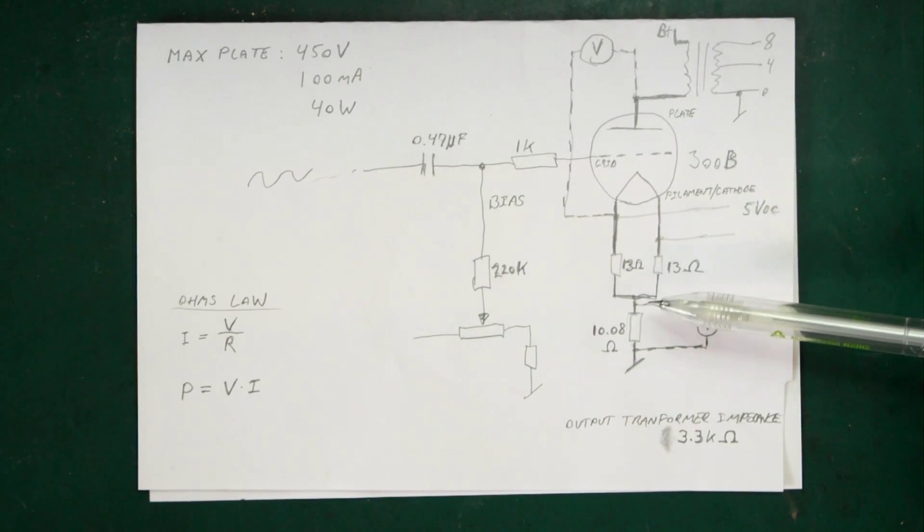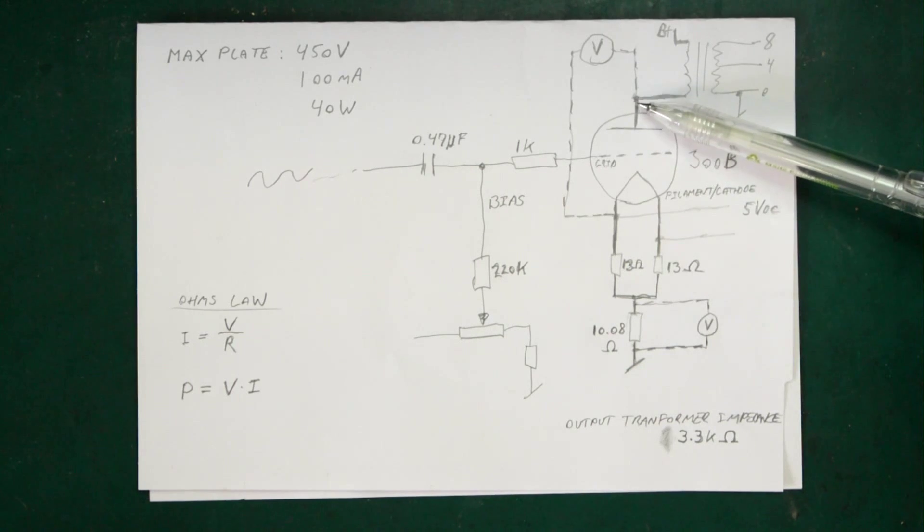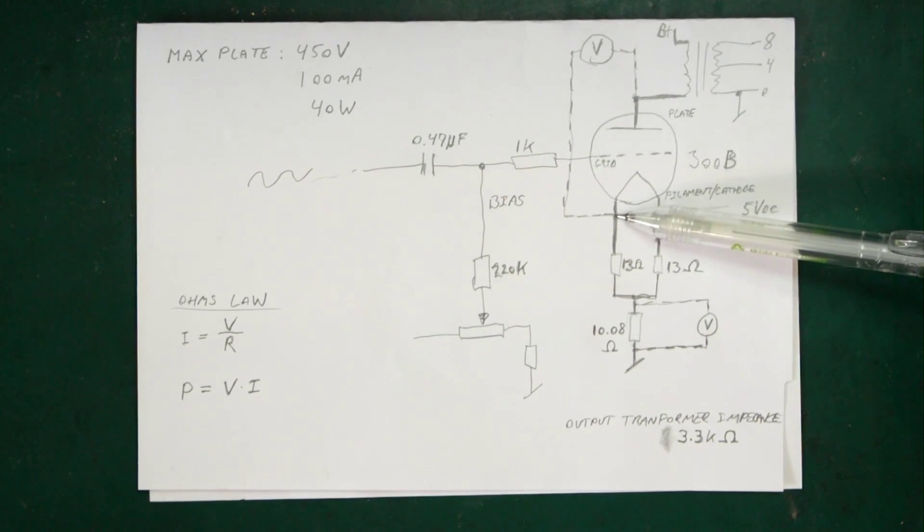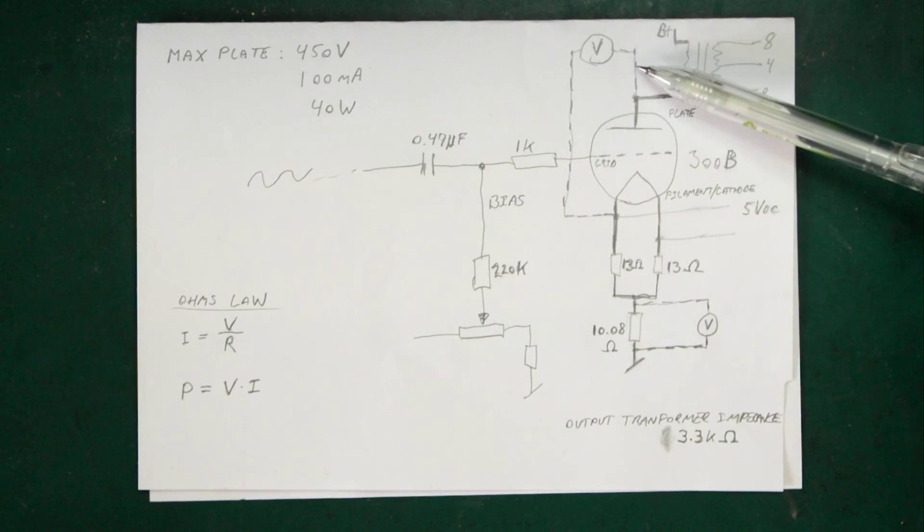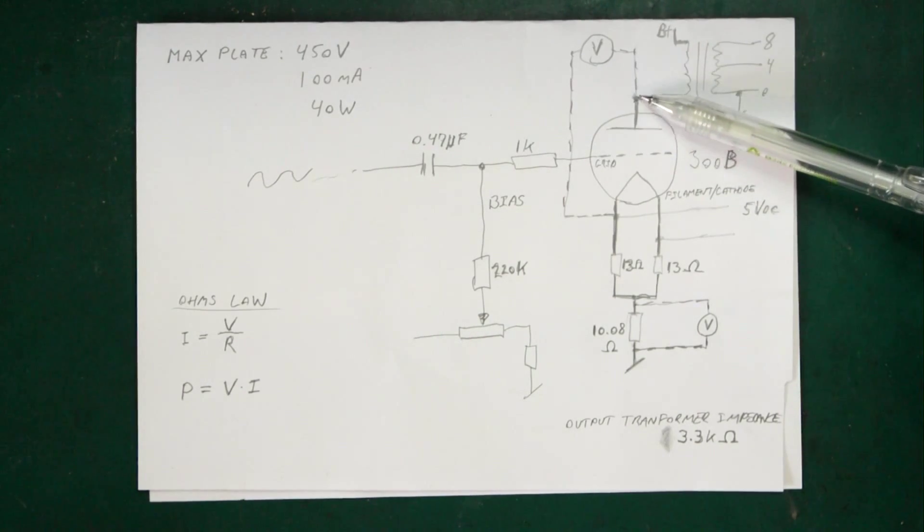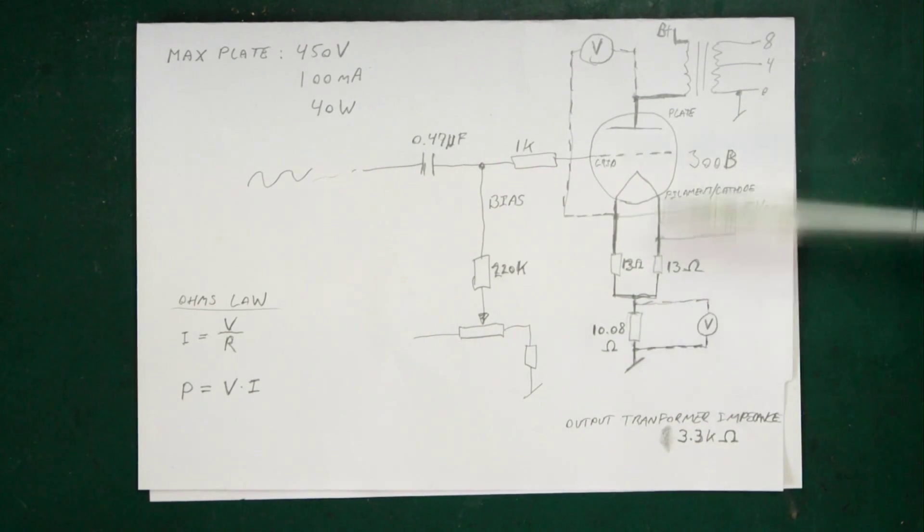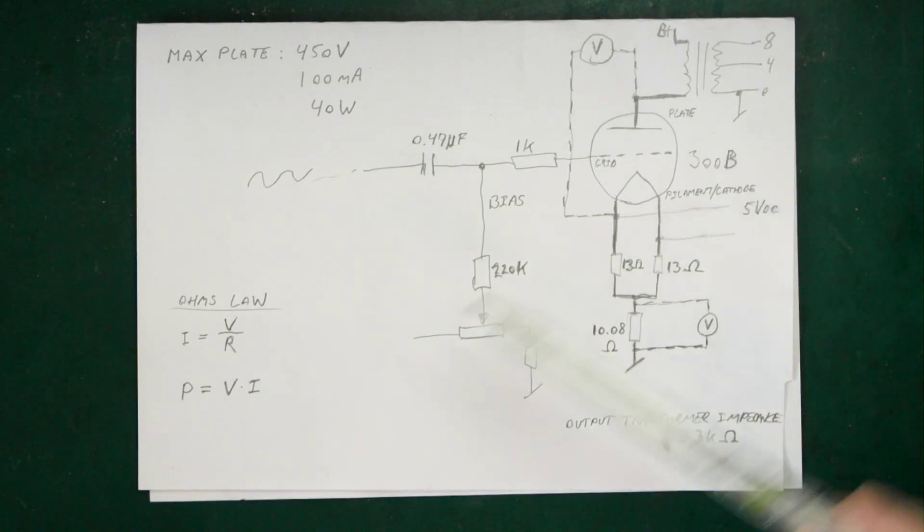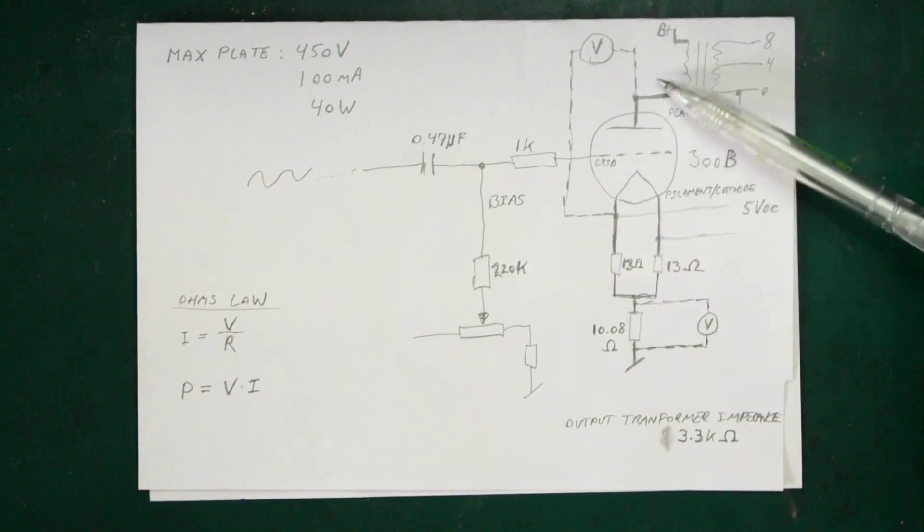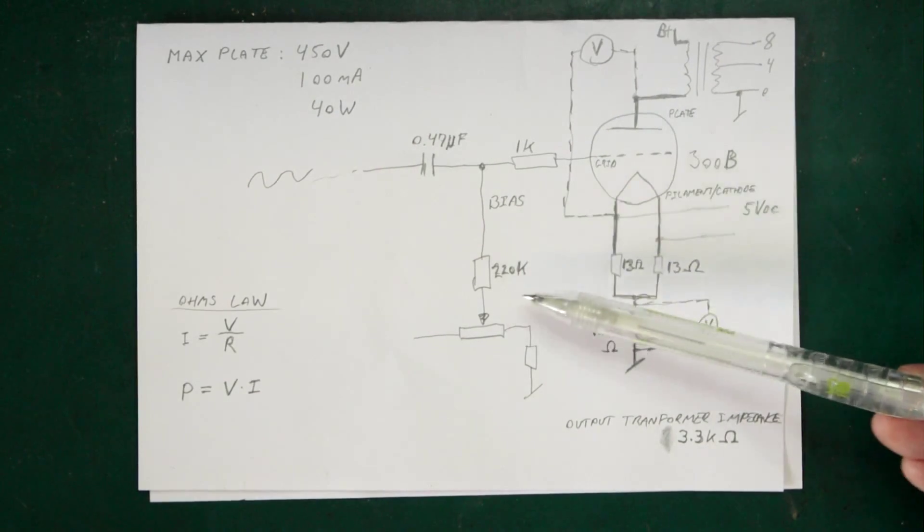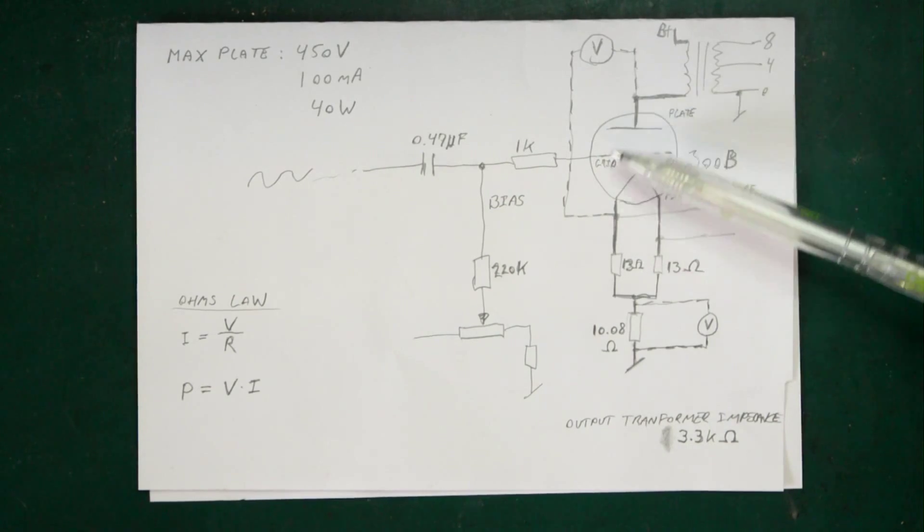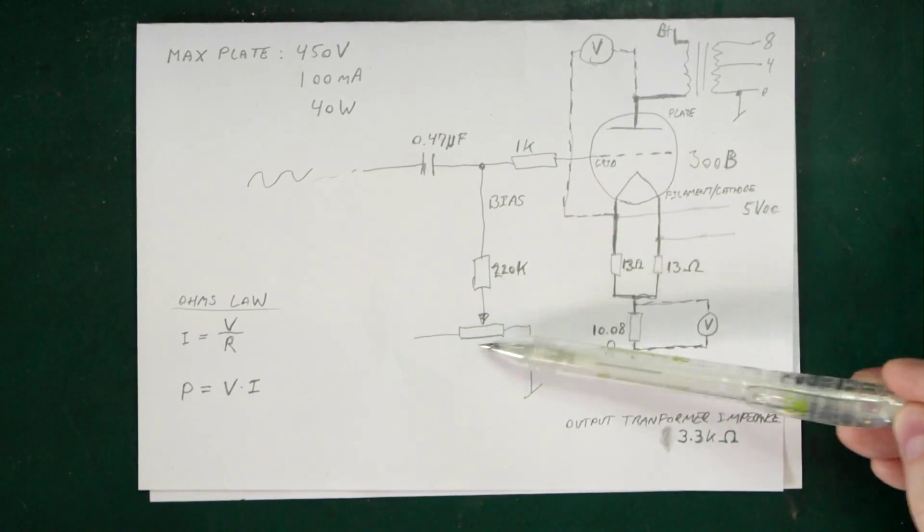Another voltage we need to know is the plate voltage. So if we measure between here and here, just insert a voltmeter, that will measure the plate voltage. Once we have these two voltage, the plate current and the plate voltage, we can calculate again using Ohm's law, we can calculate the voltage or the dissipation across the tube. And we need to measure these all while we're doing our bias adjustment.